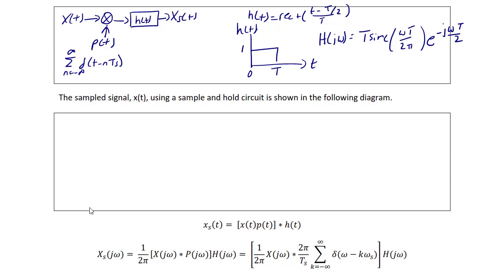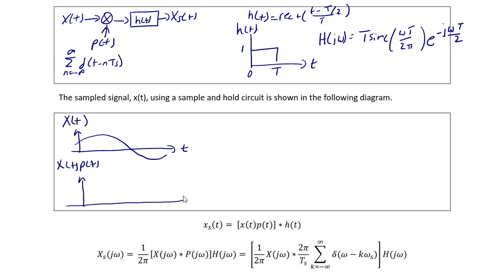The sampled signal uses a sample and hold circuit as shown. Assume the input is an arbitrary signal X(t). The product X(t)·P(t) gives impulses that sample the signal at 0, 1·TS, 2·TS, 3·TS, 4·TS, and 5·TS.